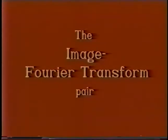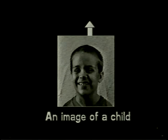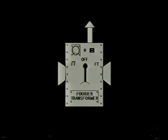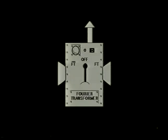Part 1: The Image-Fourier Transform Pair. For every image, there is a unique Fourier transform. We take this image and run it through our Fourier transform machine, and out pops the Fourier transform.